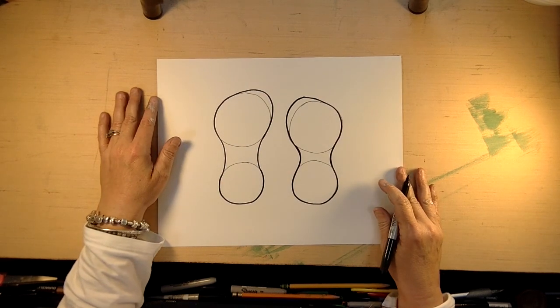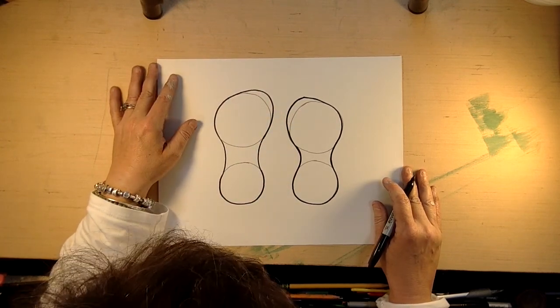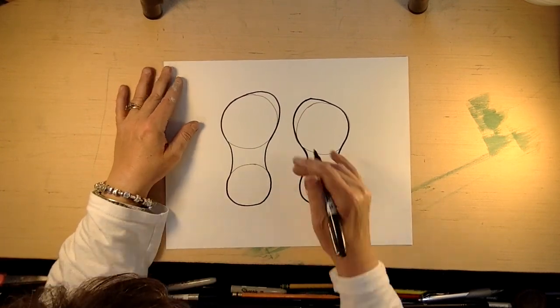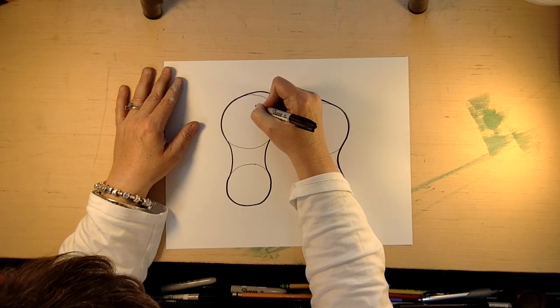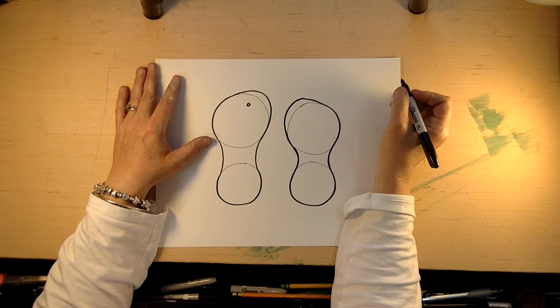Then so if you notice you have the shape of a flip-flop. There you go. So there's your big toe kind of. Okay and then if you want we're going to put the straps on it now so it can stay on your foot.